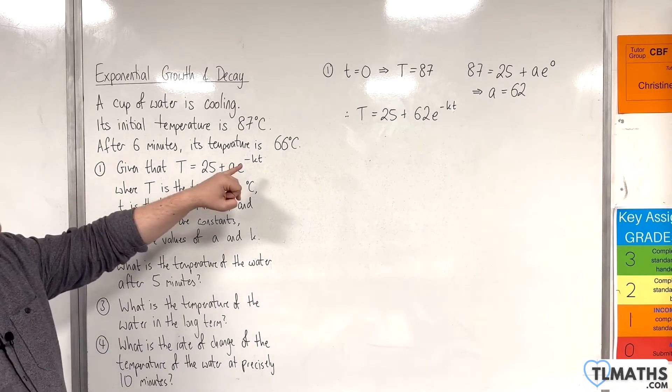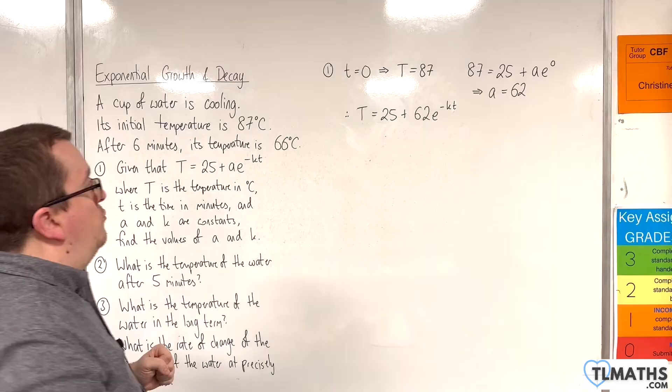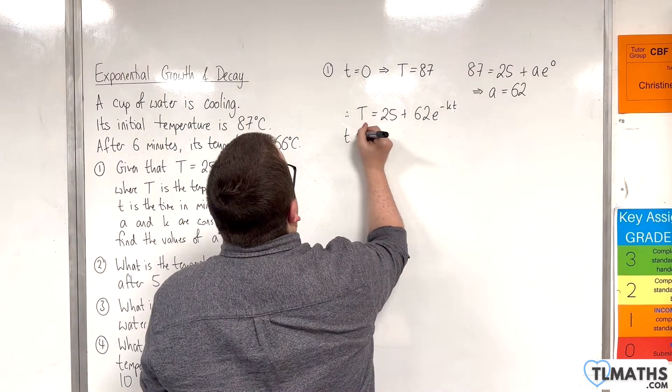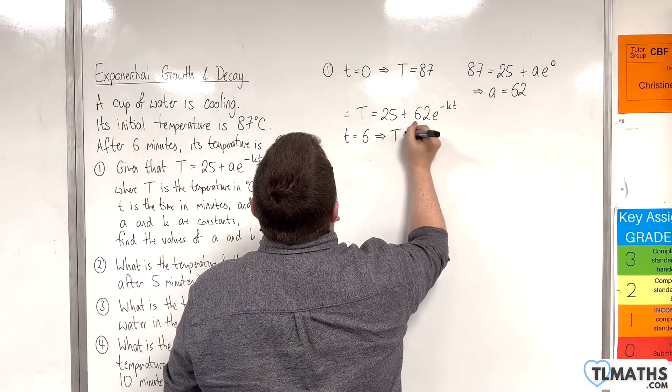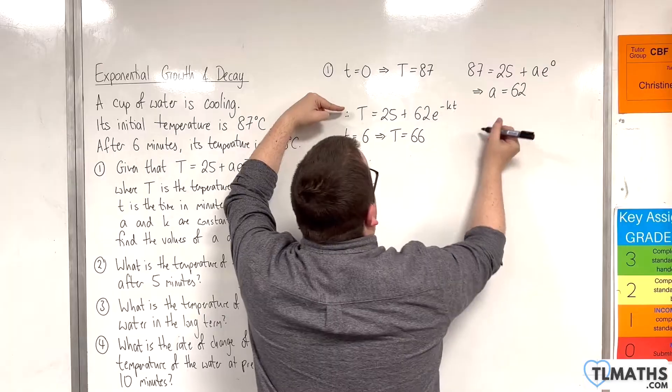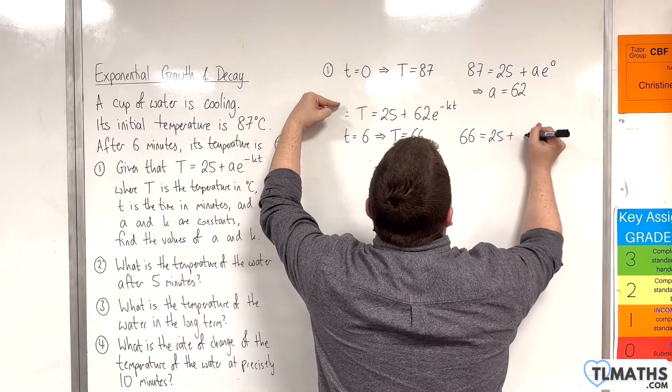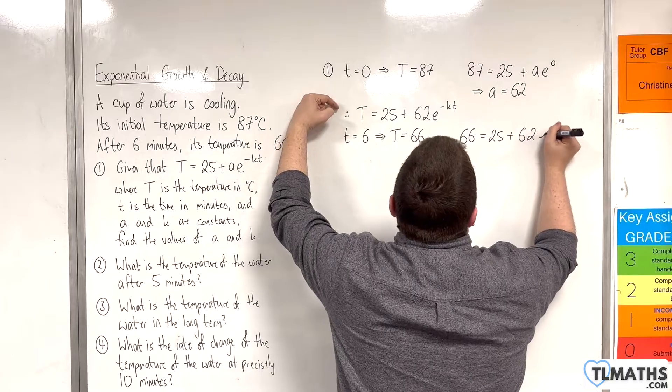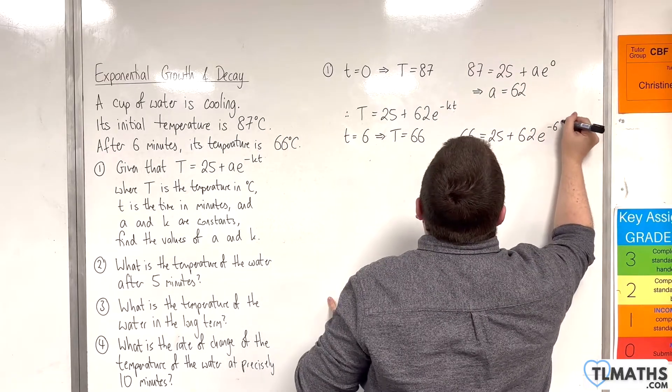Now the next bit of information, after 6 minutes, its temperature is 66 degrees centigrade. So when lowercase t is 6, that implies that capital T is 66. So we'll plug those in now. 66 is 25 plus 62 E to the minus K times 6, so minus 6K.